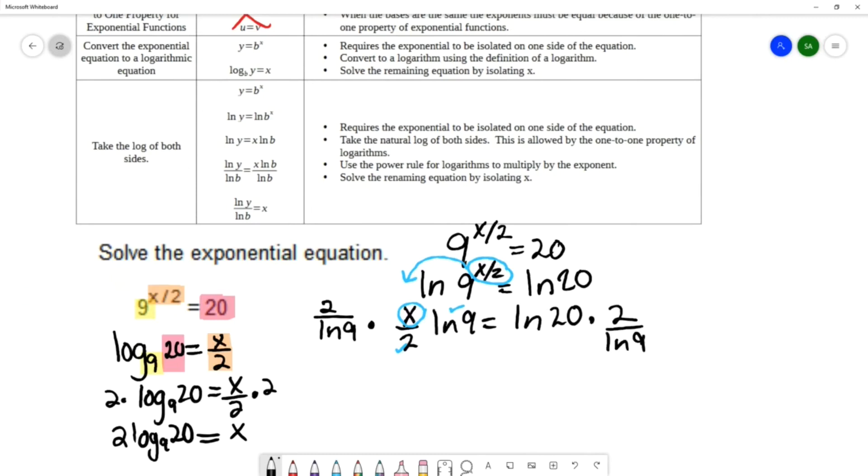And that will cancel out the 2's and that will cancel out the natural log of 9, leaving me with x. And that gives 2 natural log of 20 over natural log of 9.